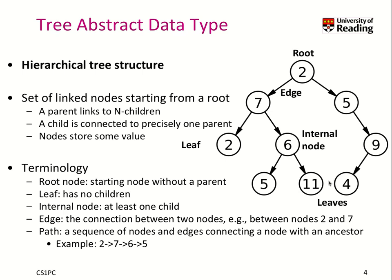So there is no connection, for example, on this level again with another connection here. There is always one way from a leaf to the root. The root node is a starting node without a parent. A leaf has no child. An internal node has at least one child.